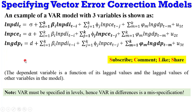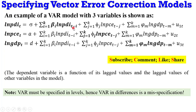A VAR model has variables in which the dependent variable is a function of its lag values and also contains the lag values of other variables in the model. When you are looking at a VAR system, all the variables are endogenous — there are no exogenous variables. On observation, you will see that all the variables listed do not have the difference operators; all of them are specified in levels. They all have the same lag length, k — so in a VAR model, all the variables take the same number of lags.